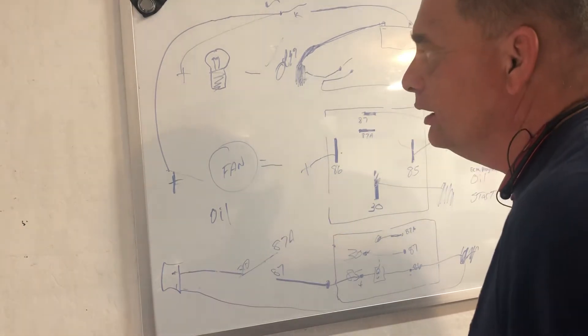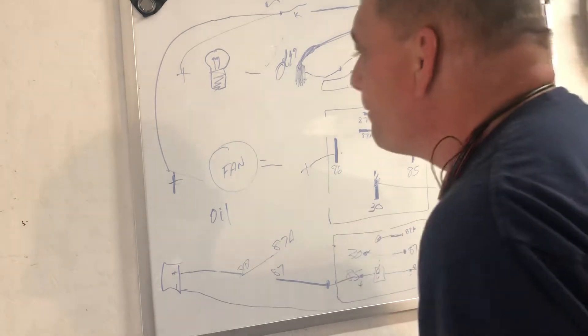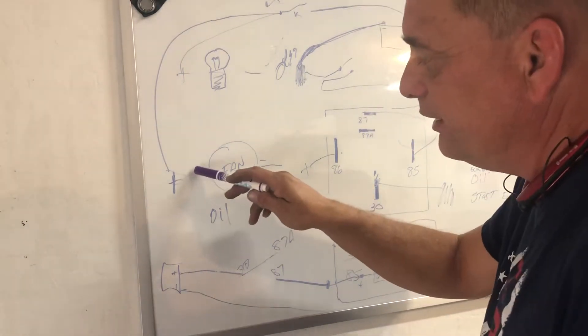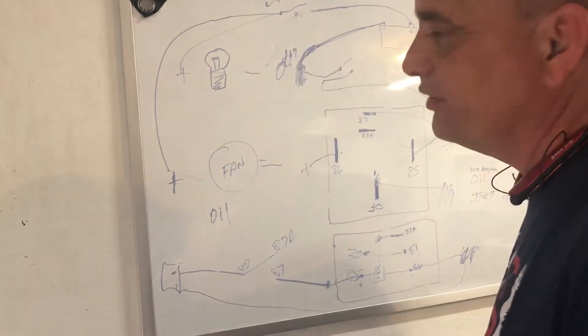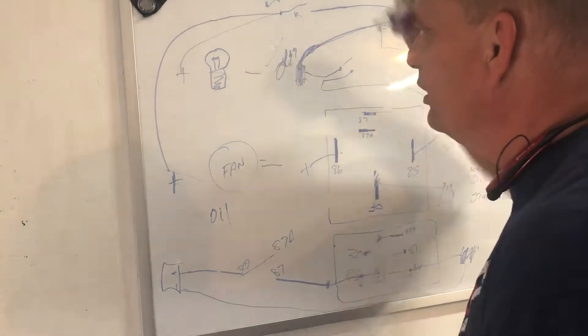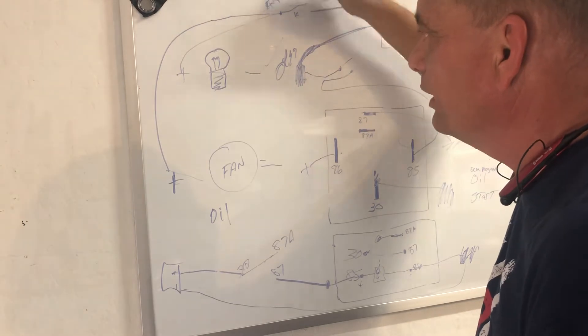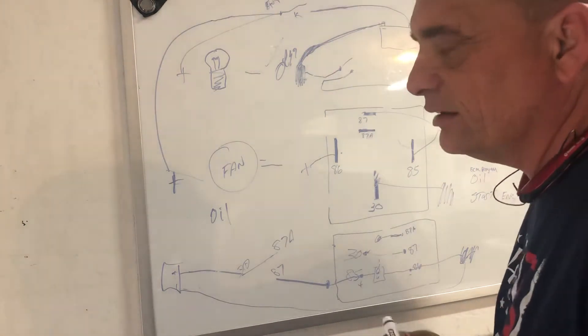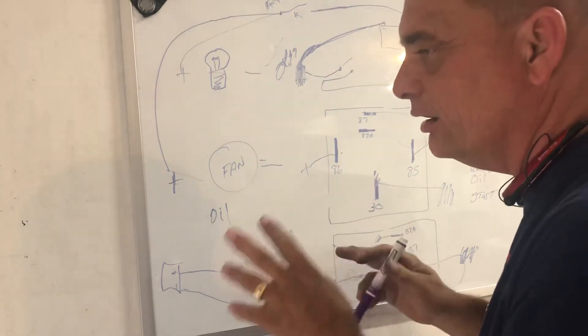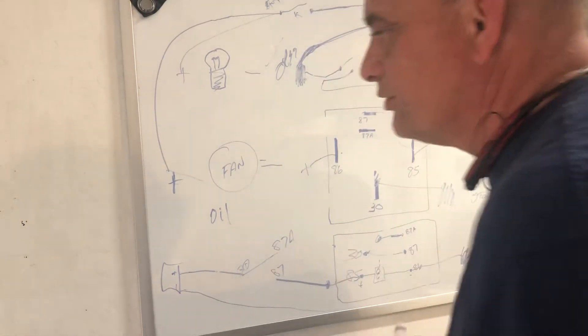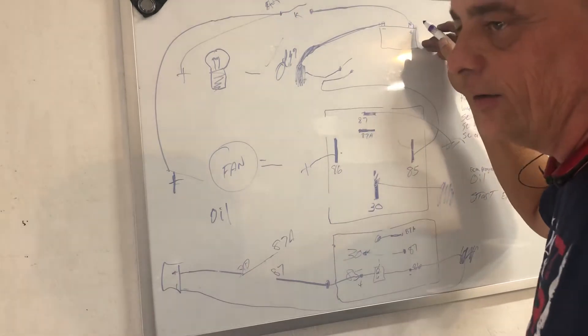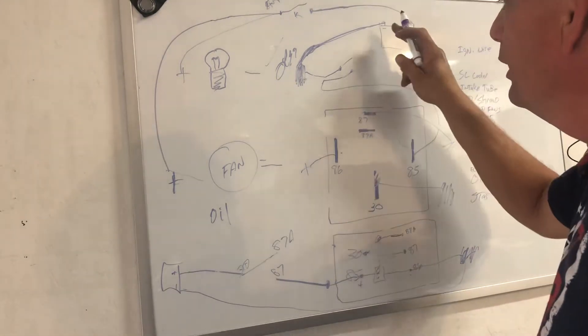So here's what I'm going to do. I'm going to use my fan's positive and my idiot light positive. I'm going to hook those to the key to the on terminal, okay? Not the start, not the accessory, the on terminal. So the other side of the key would of course be the positive from the battery.